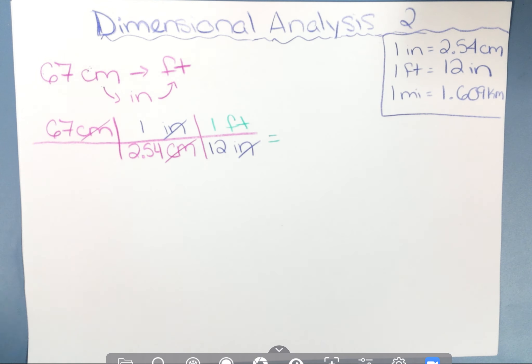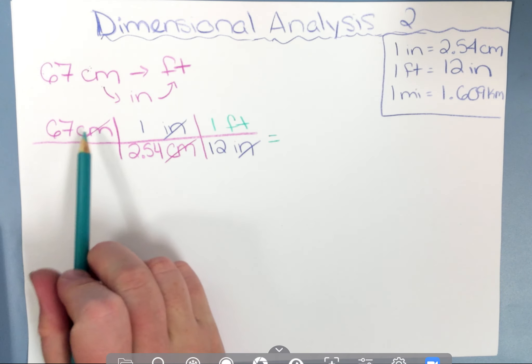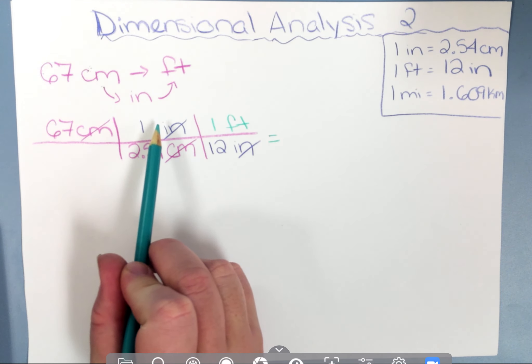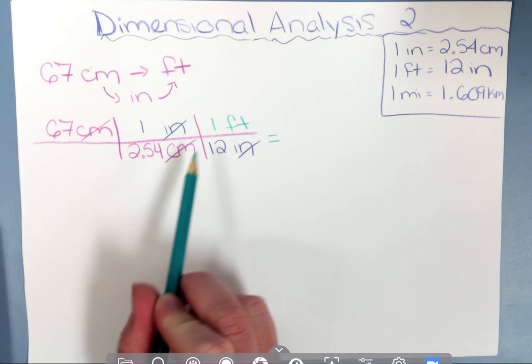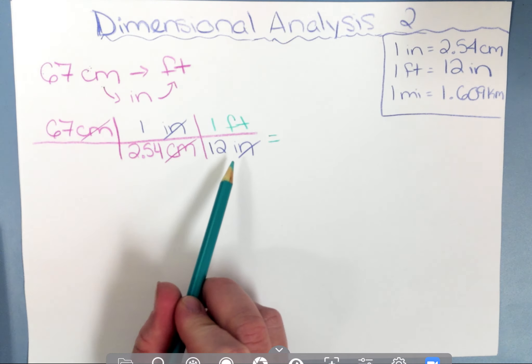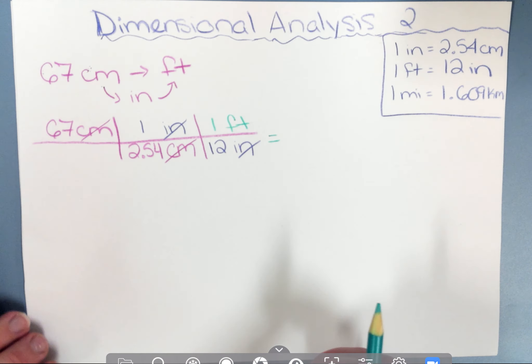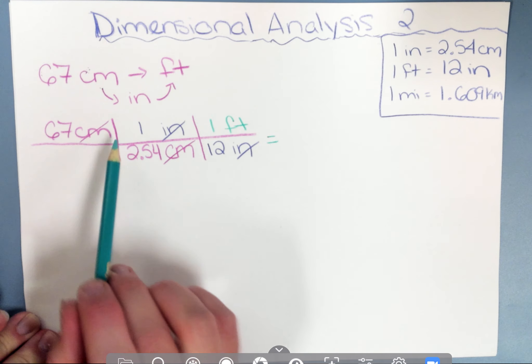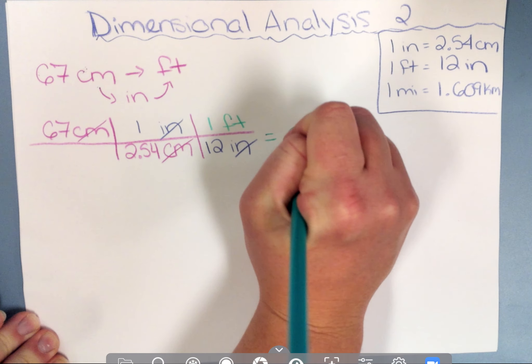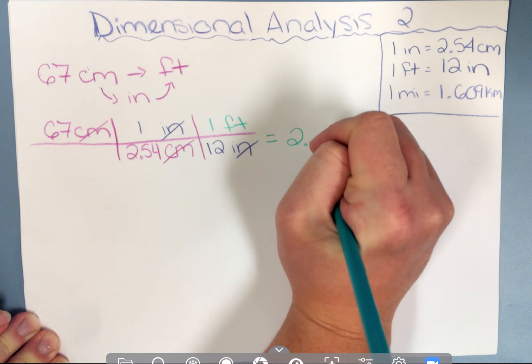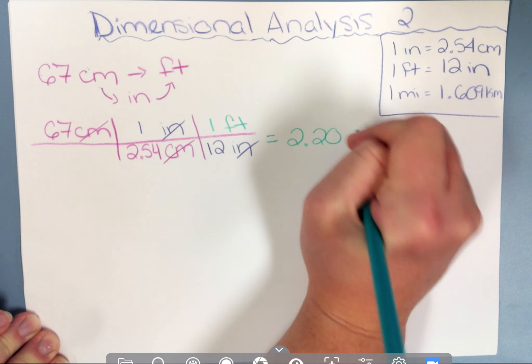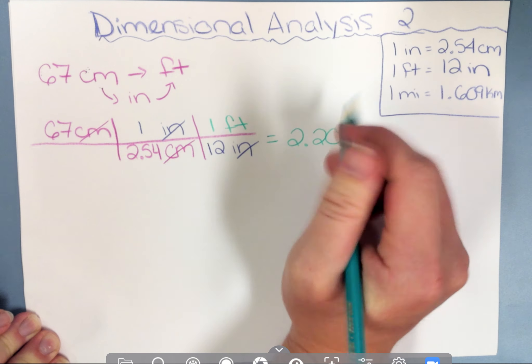When we do this question, we're going to do 67 times 1 divided by 2.54 times 1 divided by 12. And I'm going to end up with an answer of, in 67 centimeters, I have 2.0 feet. And that would be my final answer.